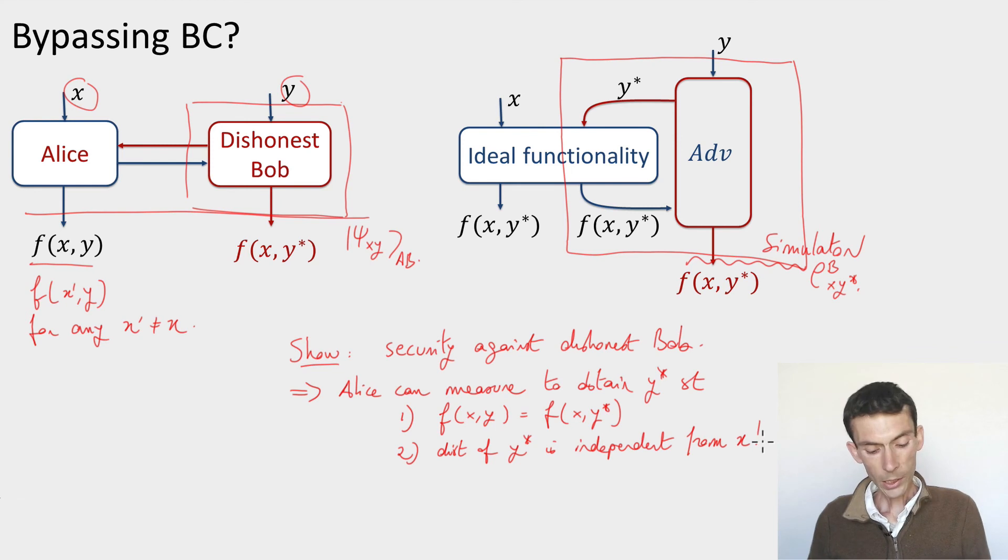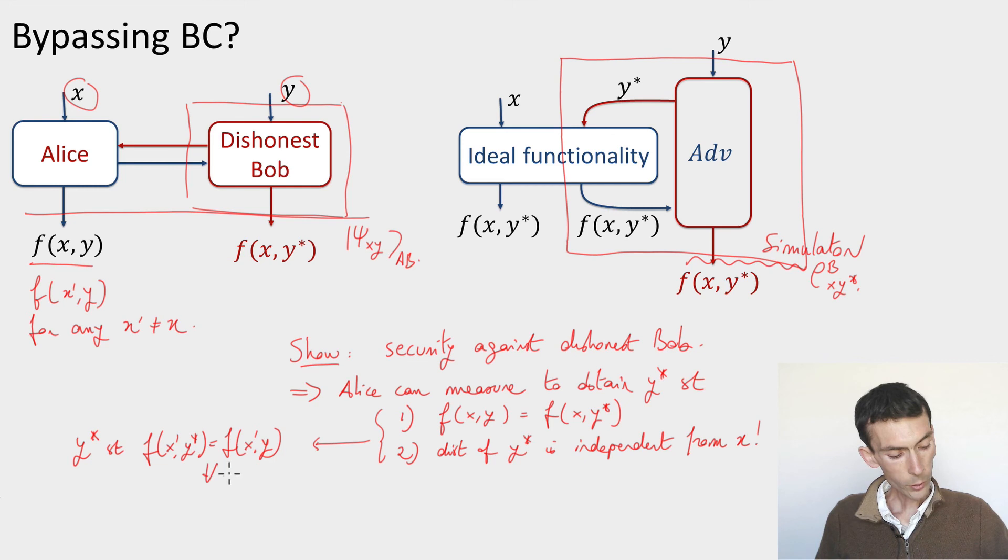So think of this y star here as a random y star that the simulator would have been chosen to simulate a certain malicious Bob. That's the first property and it's going to follow from similar kind of indistinguishability arguments that we had for bit commitment. And then the second property which is a bit more tricky to establish but can be established is that the distribution of y star is independent from Alice's input x. But if this is the case then it means that the first property should hold not only for x but also for any other possible input x prime that Alice should have. So as a consequence of these two we get that this magical input y star is such that f of x prime y star is equal to f of x prime y for every x prime. So in a way Alice has been able to obtain a proxy y star for Bob's input such that if she uses y star in place of Bob's input to the function f for any input of her choice she's going to get the right answer.